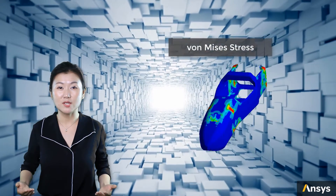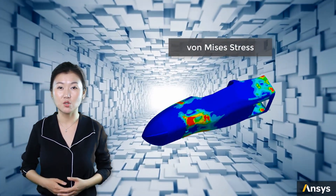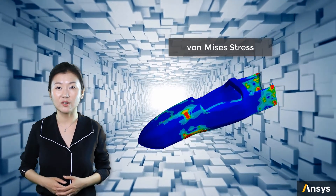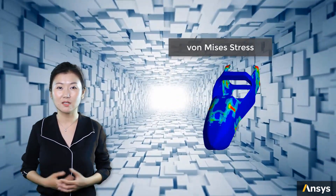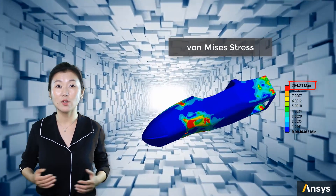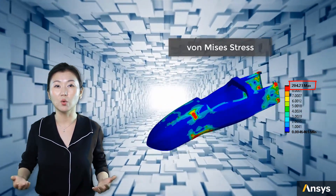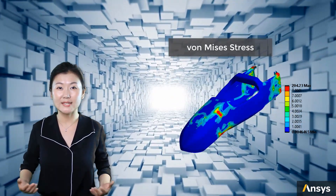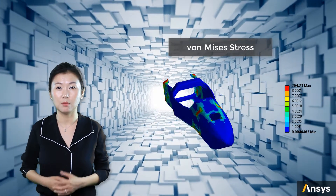The von Mises stress result shows that the high stress area concentrates around connection areas and large curvature areas of the geometry, which is expected. The maximum von Mises stress is calculated to be 200 MPa, which is far lower than the yield stress of the material. Therefore, we can say that the material is in safe condition for this problem.